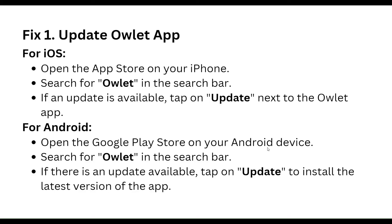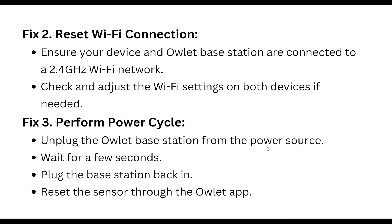The second step is to reset the Wi-Fi connection. Ensure your device and the base station are connected to a 2.4GHz Wi-Fi network. Check and adjust the Wi-Fi settings on both devices if needed. Perform a power cycle by unplugging the base station from the power source, wait a few seconds, then plug it back in. Reset the sensor through the wallet app.